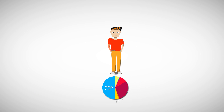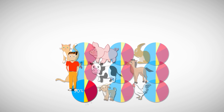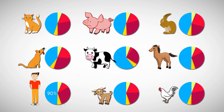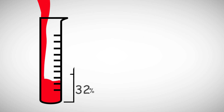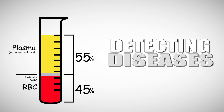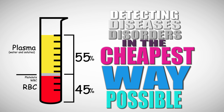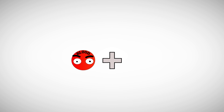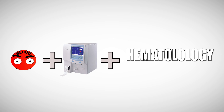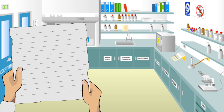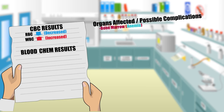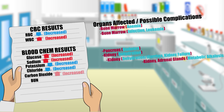These measurements of course vary from species to species. Knowing the normal components of the blood is very helpful in detecting diseases or disorders in the most cost-effective way possible. With just a drop of blood, a machine, and basic knowledge in hematology and clinical pathology, any deviations from normal values can indicate signs of abnormalities occurring in our body.